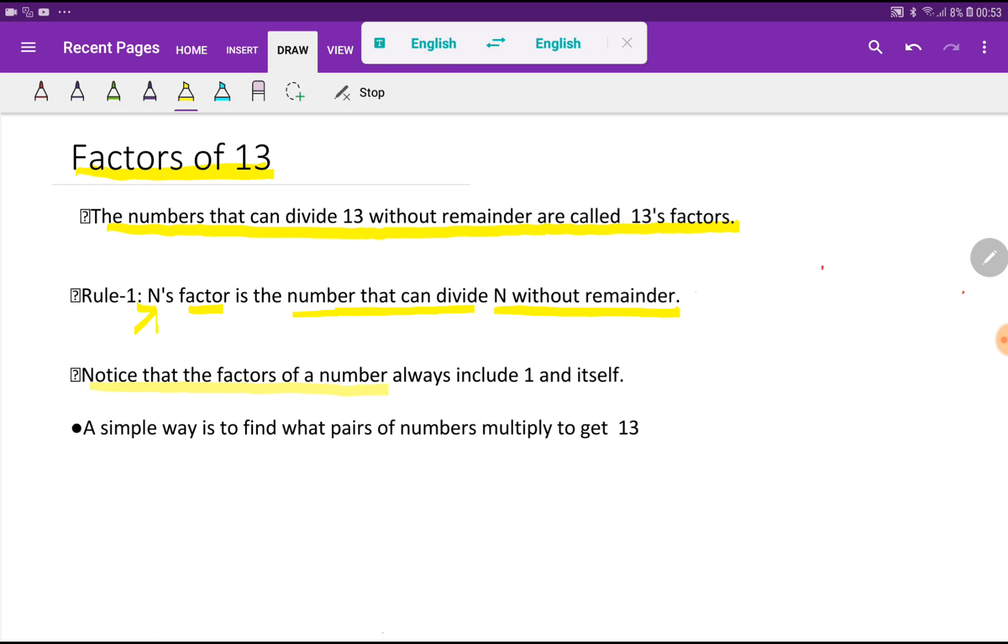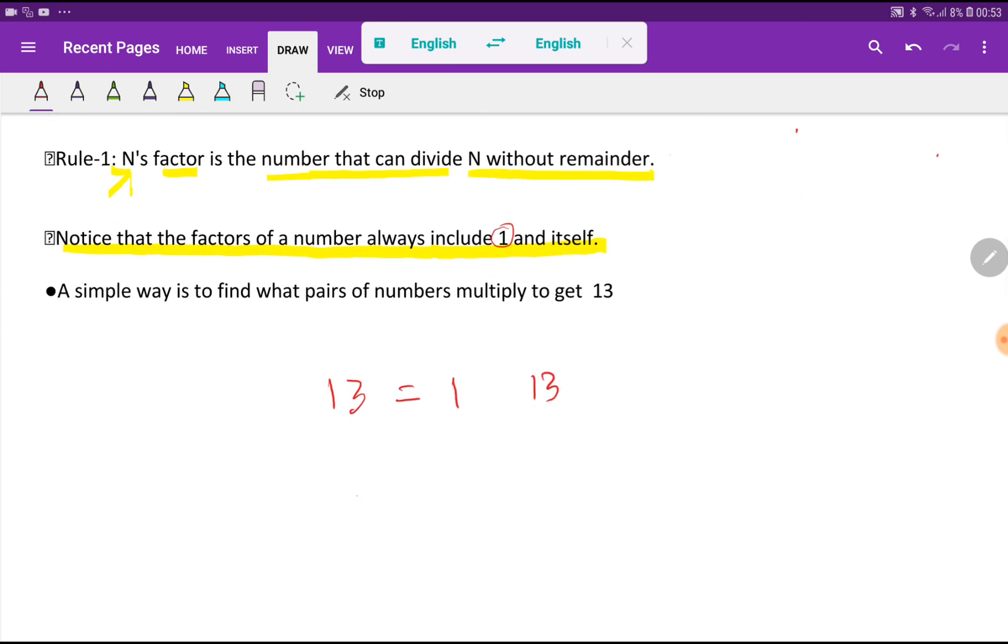Notice that the factors of a number always include 1 and itself. According to this sentence, the factors of 13 will be 1 and itself, which means 13. Look at here.